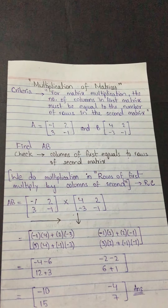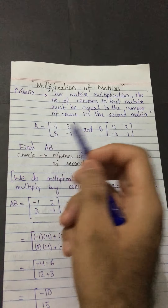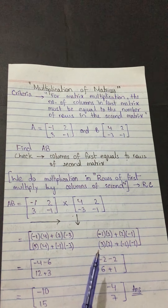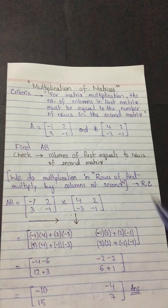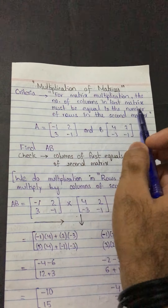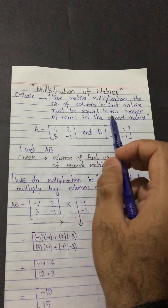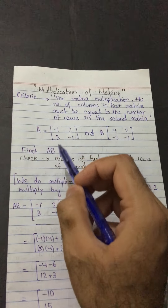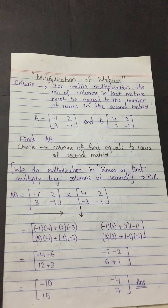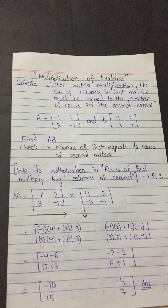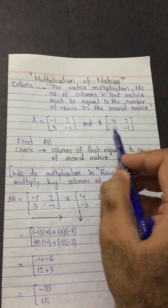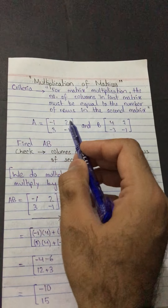In multiplication, you also have to satisfy a criteria, but this criteria is a little bit different. For multiplication of matrices — we are dealing with two-by-two matrices — in order to multiply two matrices, you need to make sure the criteria is fulfilled. The criteria is: the number of columns in the first matrix must be equal to the number of rows in the second matrix. You have to remember this — columns of the first equals rows of the second. If the criteria is not fulfilled, they cannot be multiplied.